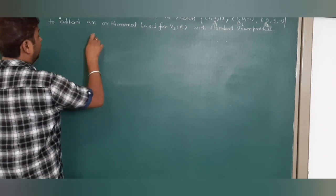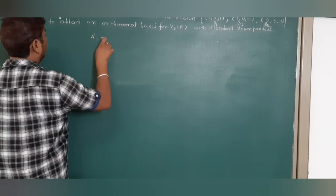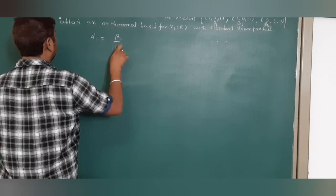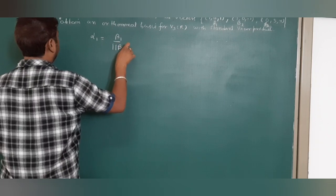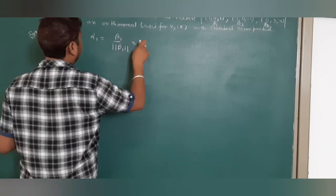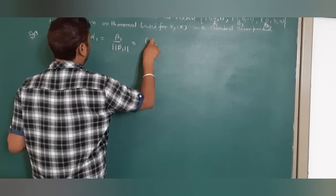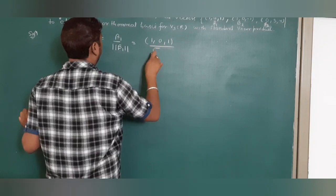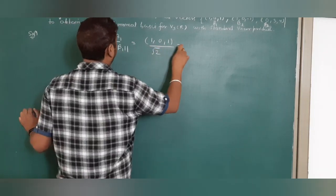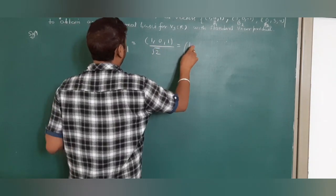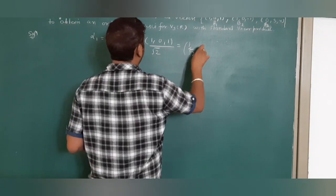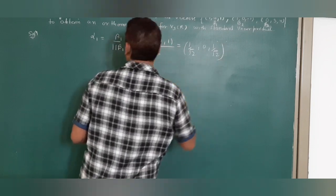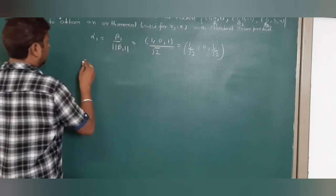How do we find alpha 1? Alpha 1 is beta 1 upon norm of beta 1. What is beta 1? It is (1, 0, 1). What is the norm? Root 2. So the final value is 1 by root 2, 0, 1 by root 2. This is your alpha 1.